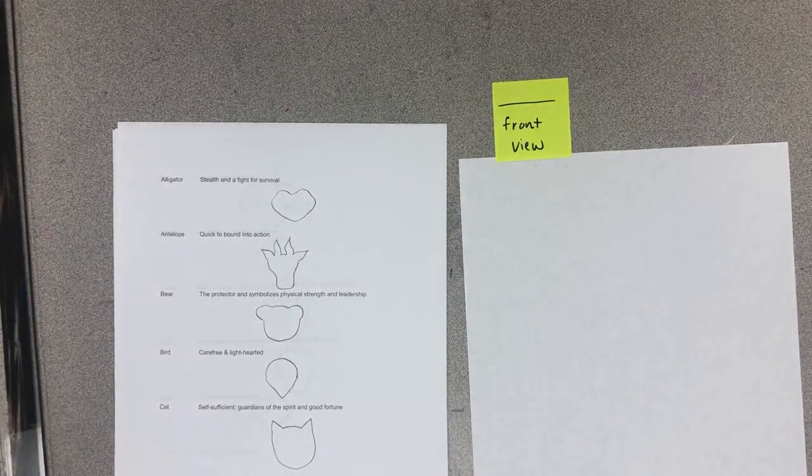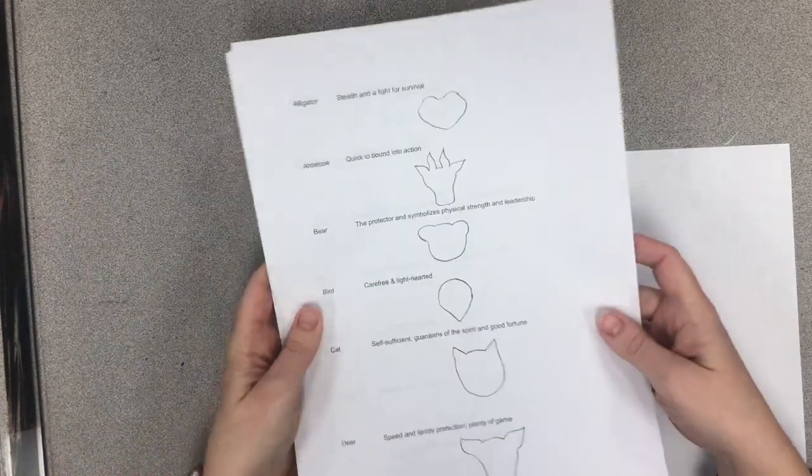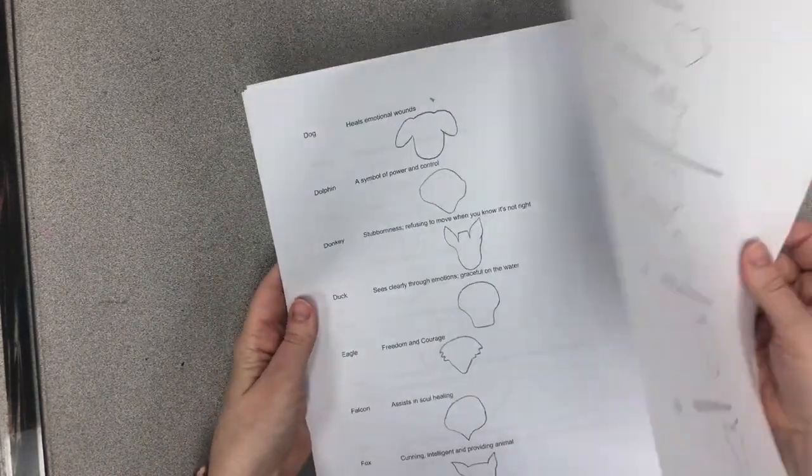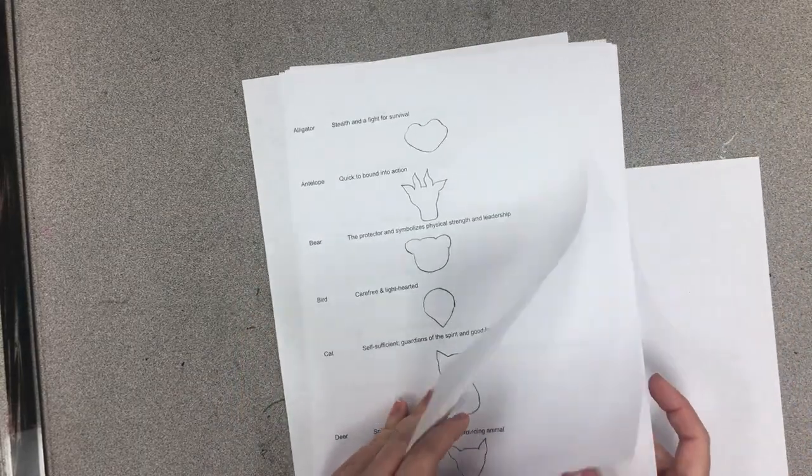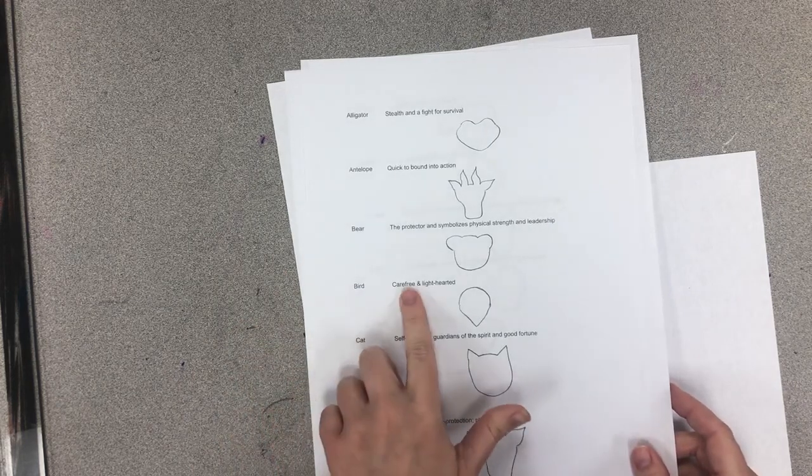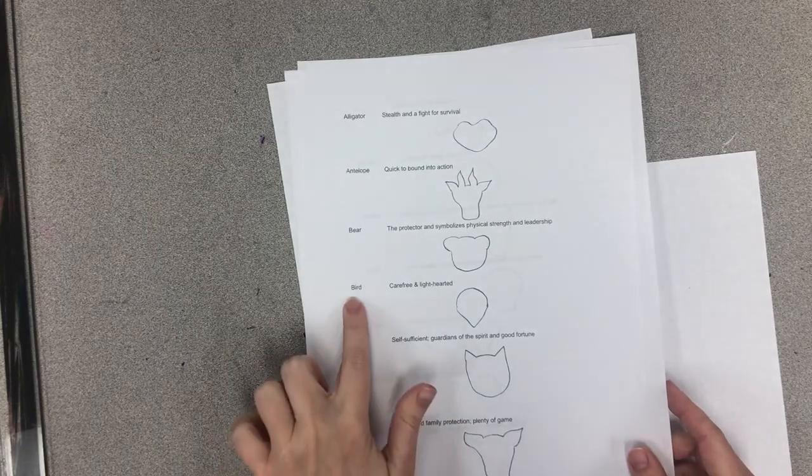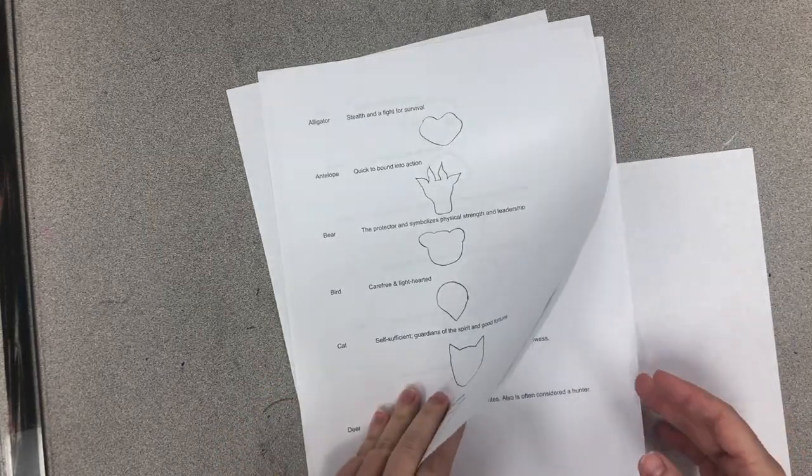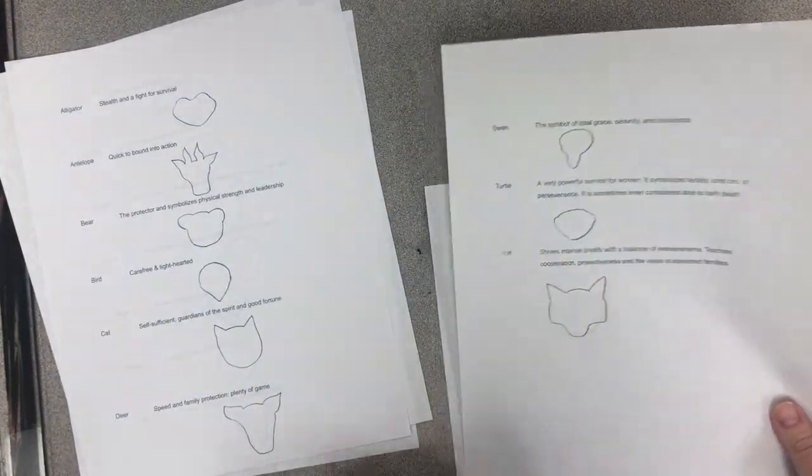Okay, so we are going to decide whatever our dear sweet spirit animal is. There's a whole list of animals that you guys will get to look at and choose from. It'll tell you the animal and what the meaning is behind it for the totem pole. So, example: bird or carefree and light-hearted. I've already picked one for me. I want to do a wolf. It says a wolf shows intense loyalty with a balance of independence.